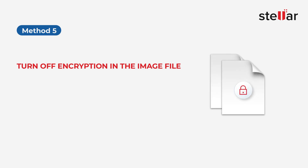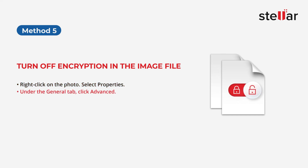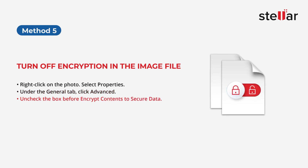Method 5: Turn off the encryption in the image file. Right-click on the photo and select Properties. Under the General tab, click Advanced. Uncheck the box before 'Encrypt contents to secure data,' then click OK.